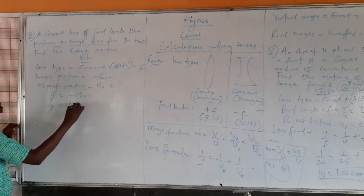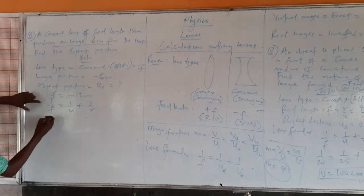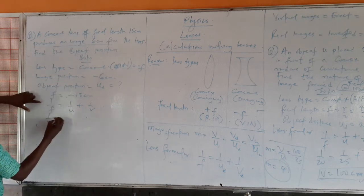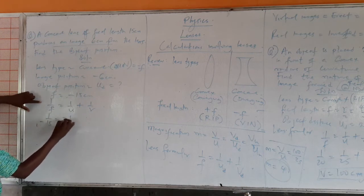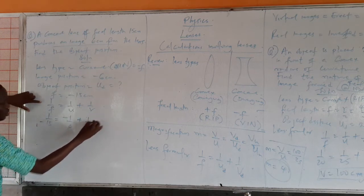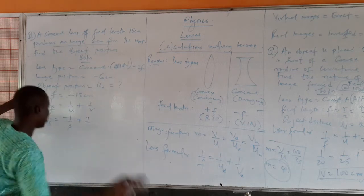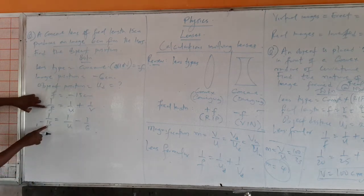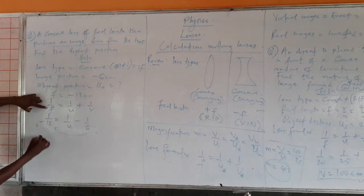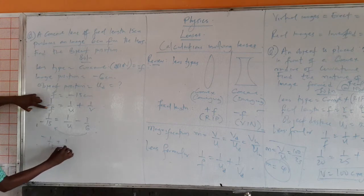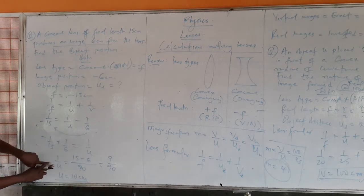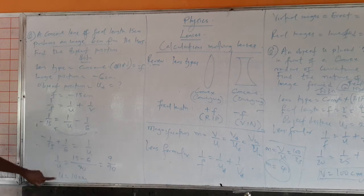Using the lens formula: 1 over F equals 1 over U plus 1 over V, so minus 1 over 15 equals 1 over U plus minus 1 over 6. Rearranging to solve for 1 over U: 1 over U equals minus 1 over 15 plus 1 over 6. Taking the LCM of 90, we get U equals 10 cm.